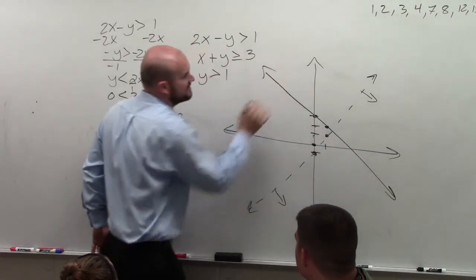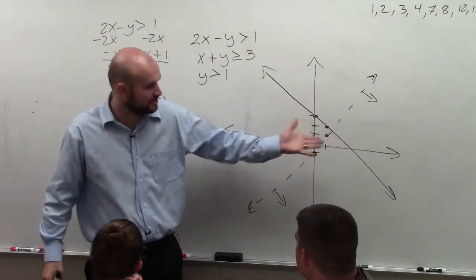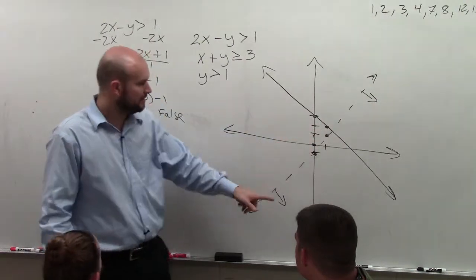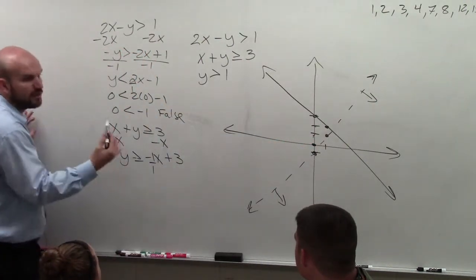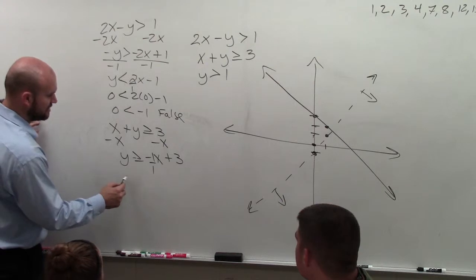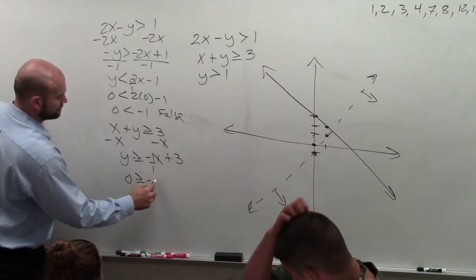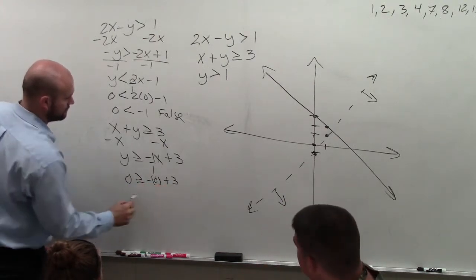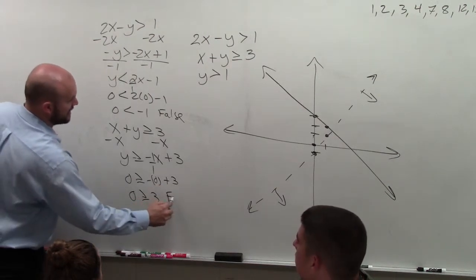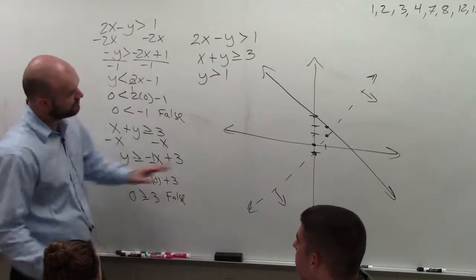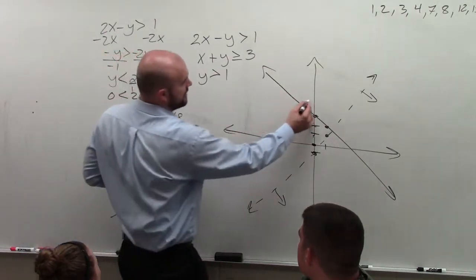Unlike systems of equations, we're not concerned about where exactly they intersect — we're concerned about the shading. I need to use the test point again, because there's going to be more than one solution with inequalities. Testing (0, 0): 0 is greater than or equal to 3 — that's false. So for this one, since that point is false, I'm going to shade above.